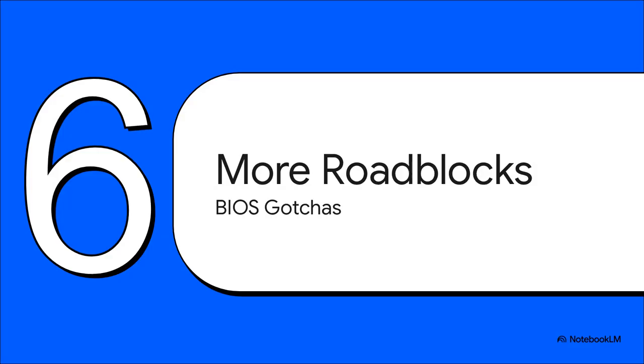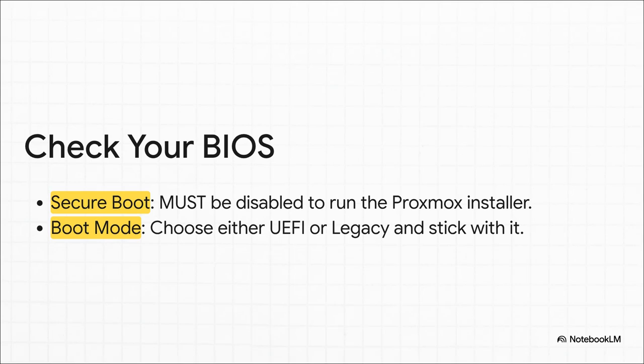Beyond the USB stick itself, there are a couple of sneaky settings deep inside your computer's BIOS that can stop your install dead in its tracks before it even begins. Here are the two big ones you have to check. First, Secure Boot — this security feature can block what it sees as unsigned operating systems, and that includes the Proxmox installer, so you have to go into your BIOS and turn it off. Second, make sure your boot mode is consistent: if you make a UEFI installer, boot in UEFI mode. If you mix and match, you're just going to get a blinking cursor.